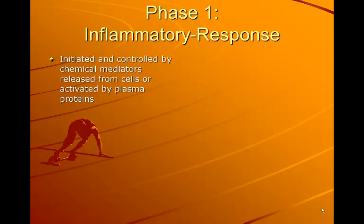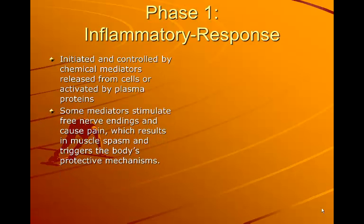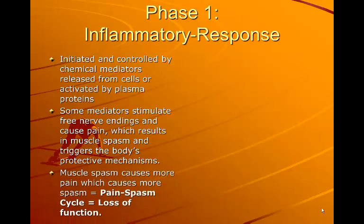This is initiated and controlled by chemical mediators released from cells or activated by plasma proteins. Some mediators stimulate free nerve endings and cause pain, which results in muscle spasm and triggers the body's protective mechanism. Muscle spasm causes more pain, which causes more spasm — that's the pain-spasm cycle — and then loss of function.